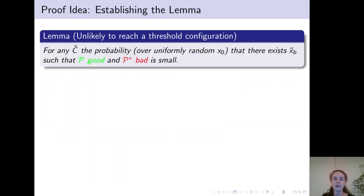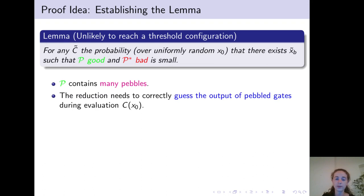And to prove this lemma, we use the following two properties. So first, the property that we just established that P must contain many pebbles. And second, we will argue that the reduction needs to correctly guess the output of all pebbled gates during evaluation of C of x0.